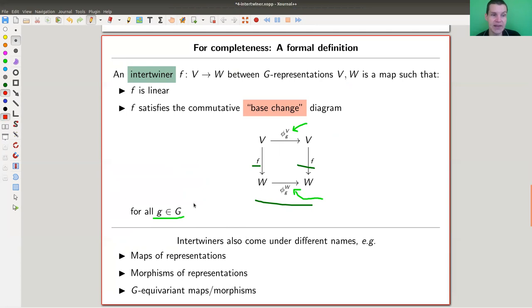F is just any map satisfying that property, and we call such maps intertwiners, and they also come under different names. So in the literature there's, well, intertwiners, I think is the most common name, I guess. I haven't really checked. But I also heard maps of representations, morphisms of representations, G-equivariant maps, and probably many more. Just don't get confused. They're always just the correct notion of maps between representations.